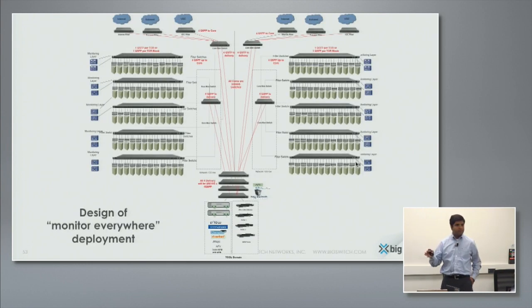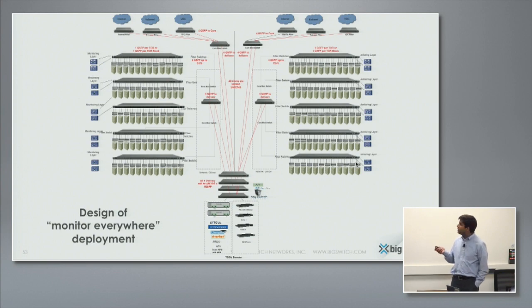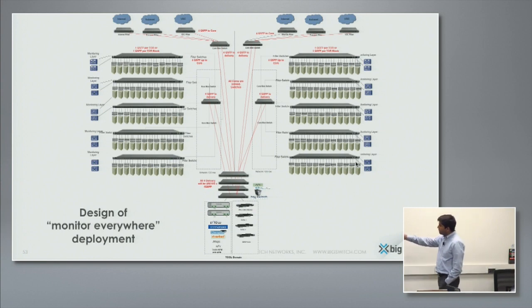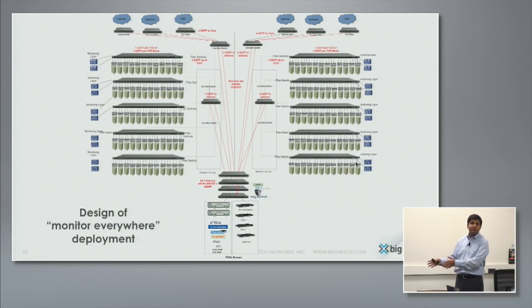Rather than going through a product pitch and comparing feature by feature, what I wanted to do was go over a couple of use cases — a couple of designs we recently implemented for our customers — and see how they are using these hyperscale principles to monitor their network. So this is a large enterprise, not hyperscale. One of the requirements this large enterprise data center had was they'd like to monitor each and every rack — this is 120 different racks — taking the span traffic from each top-of-rack switch and bringing it back to the tool farm. The notion is I can programmatically, at will, bring the relevant traffic to a pool of tools that are easy to manage and share across my teams.